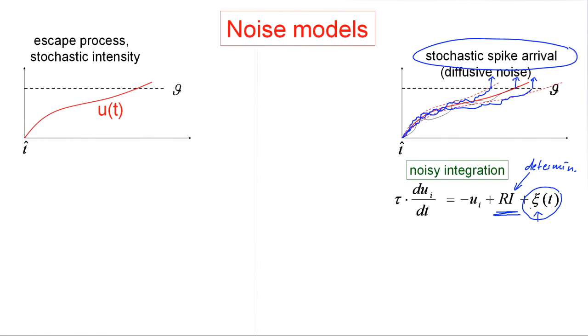And now I add noise in a completely different way. I say, despite the fact that the membrane potential hasn't yet reached the threshold θ, there is already a probability to escape across the threshold.